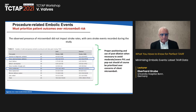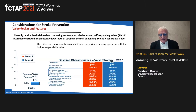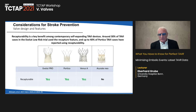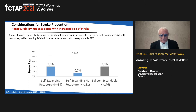Regarding valve design and stroke prevention: the SOLE TAVI randomized trial — the only randomized trial comparing contemporary balloon and self-expanding valves — demonstrated a significantly lower stroke rate in the self-expanding Evolute cohort, though this may be due to lower operator experience with balloon-expandable valves. Recapturability is not associated with increased stroke risk: self-expanding recapture 2%, self-expanding no recapture 0.7%, balloon expandable 2% — no meaningful difference.